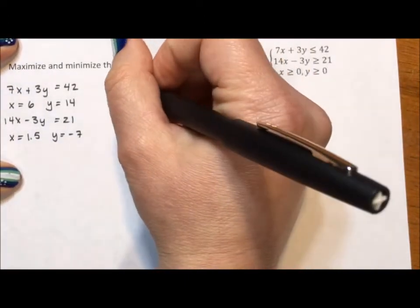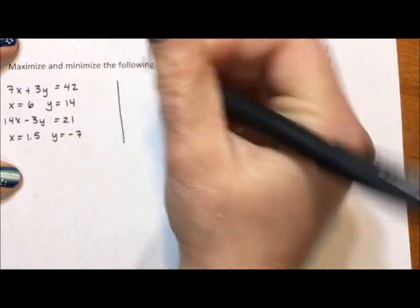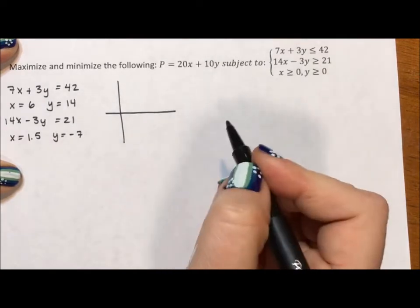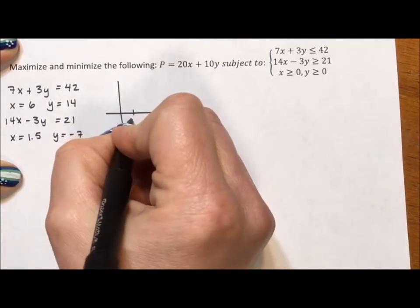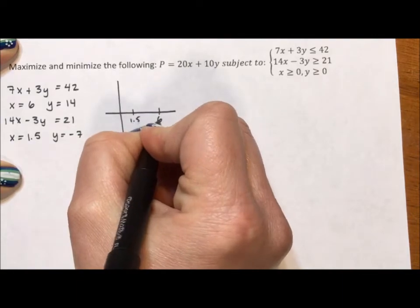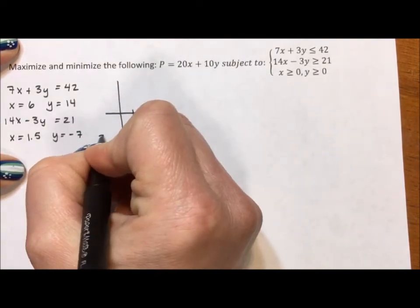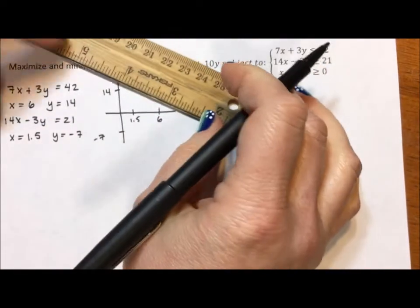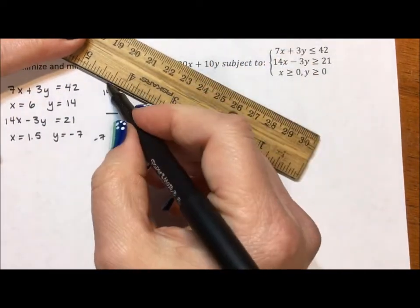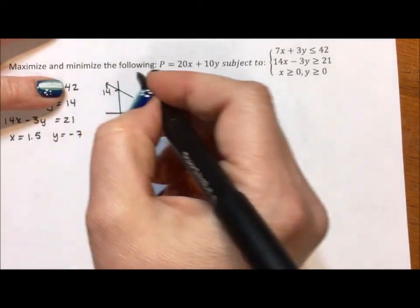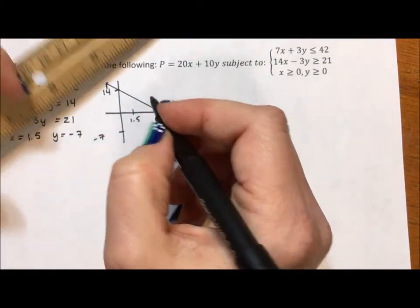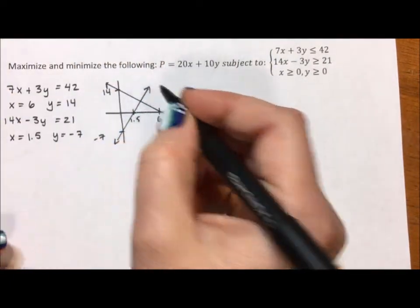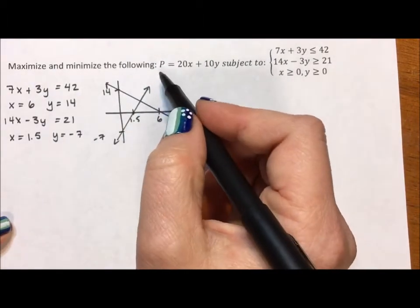If I do a quick sketch of these two lines, I'm not worried about scale. This is really just to get a rough idea of where the shaded region is. My x-intercepts are 1.5 and 6. My y-intercepts are negative 7 and 14. And if I connect these, the 6 and the 14 get connected together, and the negative 7 and 1.5 get connected together. Okay, and I have my basic graph.